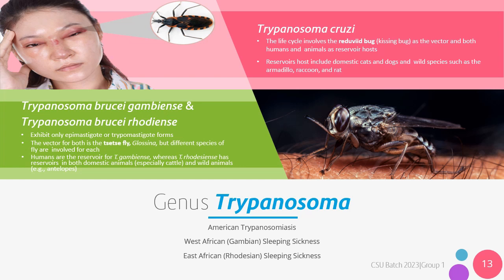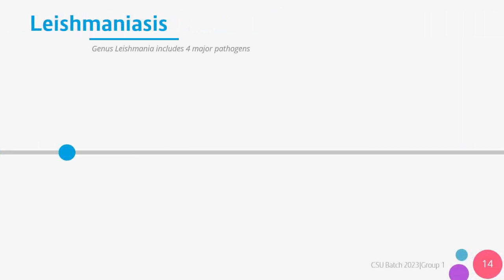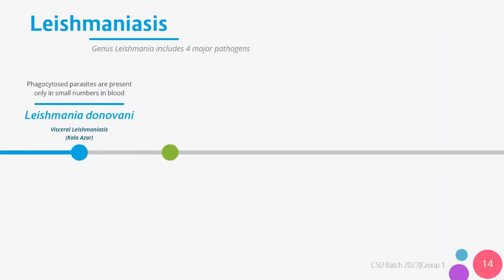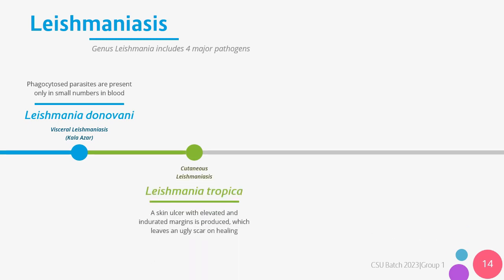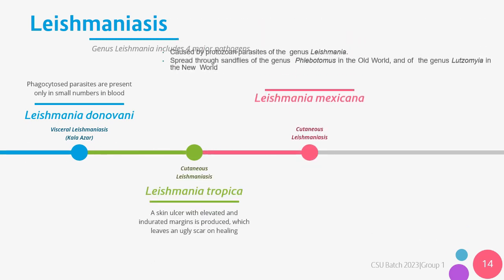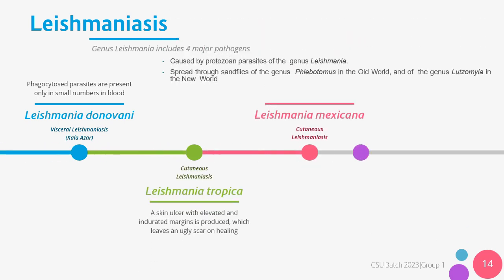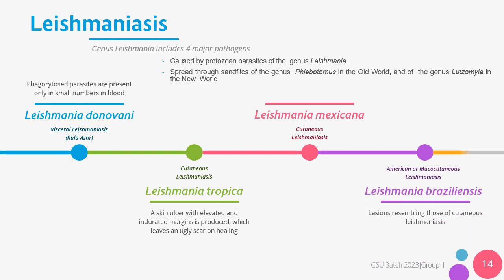While humans are the reservoir for T. gambiense, T. rhodesiense has reservoirs in both domestic animals, especially cattle, and wild animals like antelopes. Next on the list is the genus Leishmania, which causes Leishmaniasis. The genus Leishmania is spread through sandflies. These flies are incredibly small, smaller than a thumbnail or mosquito, only measuring around 1.5 to 3.5 millimeters.